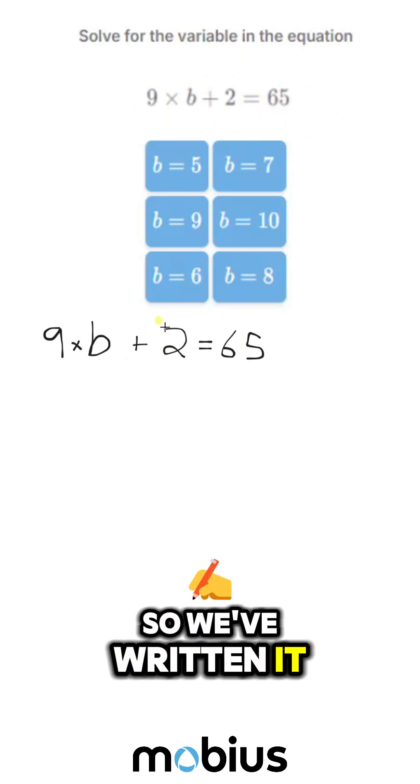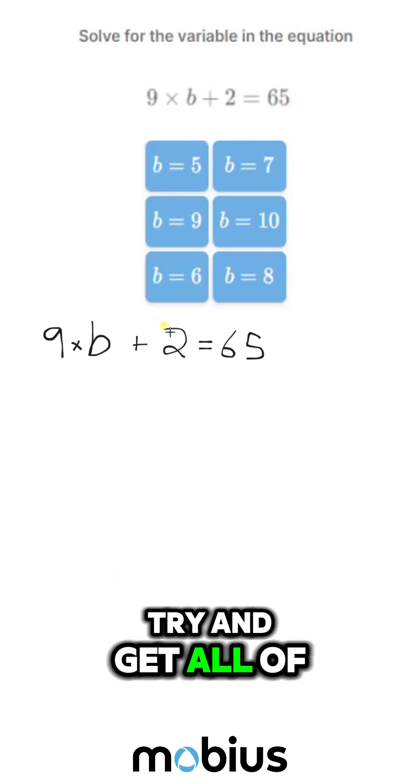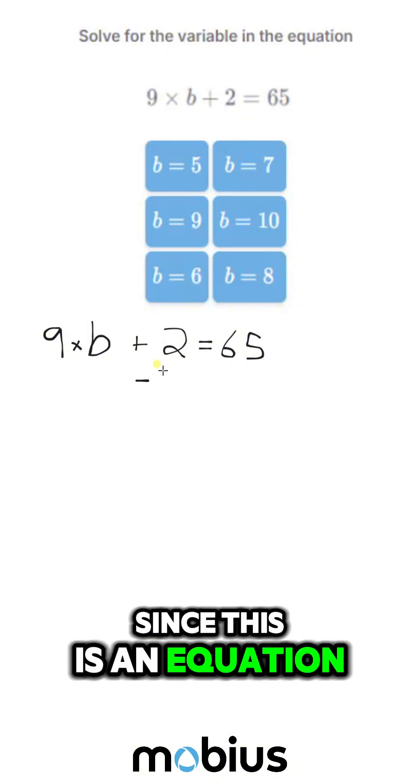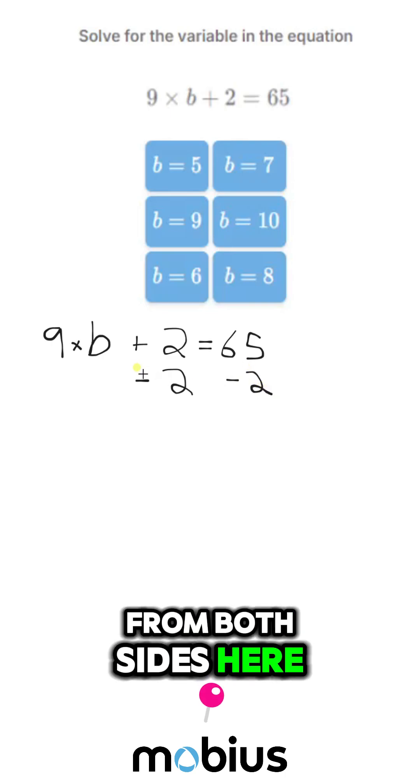So we've rewritten it here. We can do it simpler. So the first thing that we're going to do is try and get all of our numbers on one side. We can do that, since this is an equation, do the same thing to both sides. I'm going to subtract 2 from both sides here.